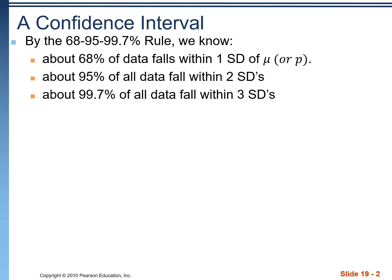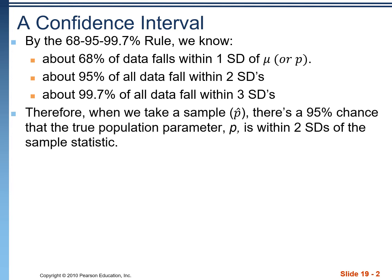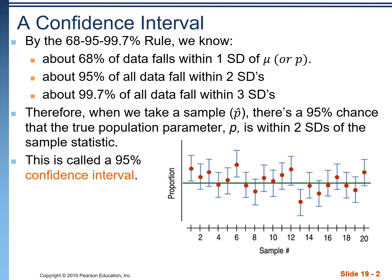This also applies to samples, which means if we take a sample from a population, there's a 95% chance that the true population parameter is within two standard deviations of that sample statistic. What I'm explaining right now is called a 95% confidence interval.